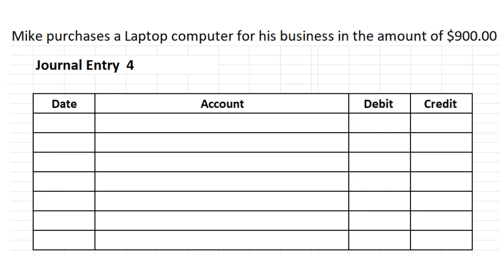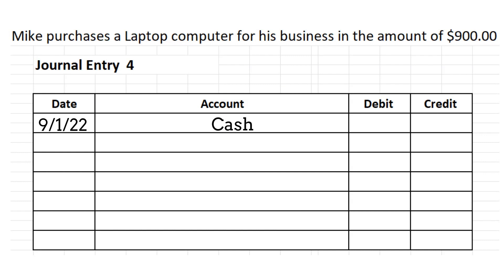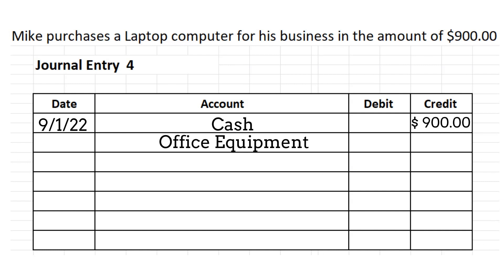In this example, Mike purchases a laptop computer for his business in the amount of $900 — journal entry number four. Cash is affected because he's purchasing something, and since cash is going down, it goes on the credit side: $900 credit. Then on the next line we categorize it as office equipment and put that on the debit side for $900.